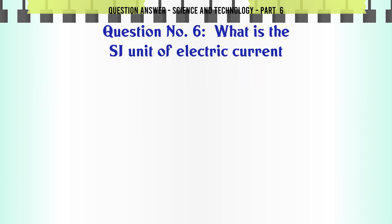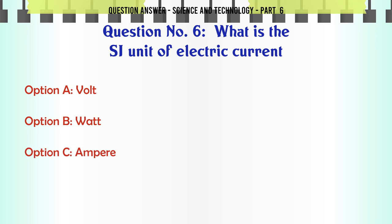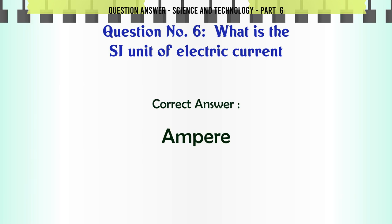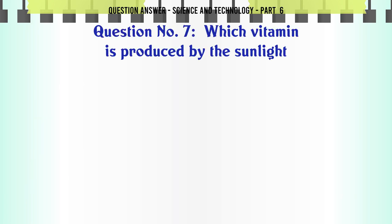What is the SI unit of electric current? A. Volt. B. Watt. C. Ampere. D. Ohm. The correct answer is Ampere.